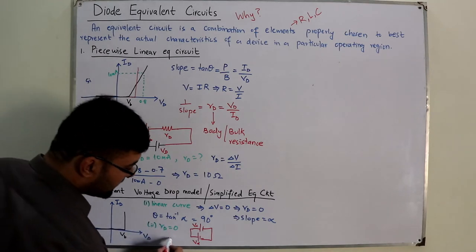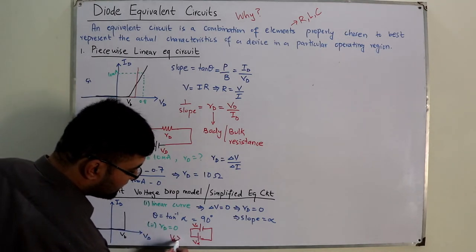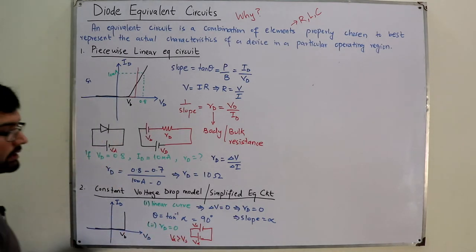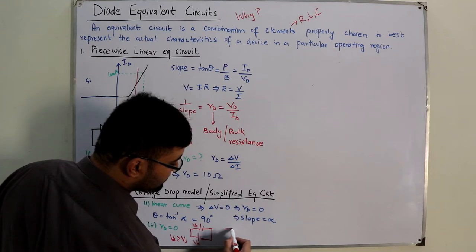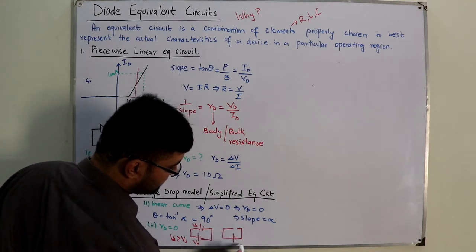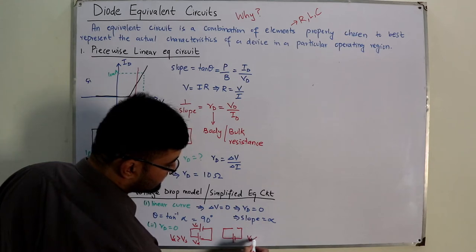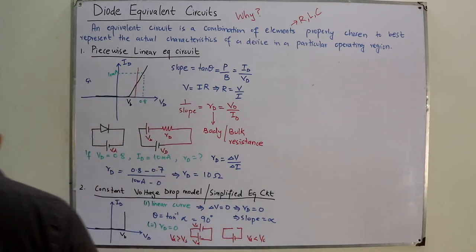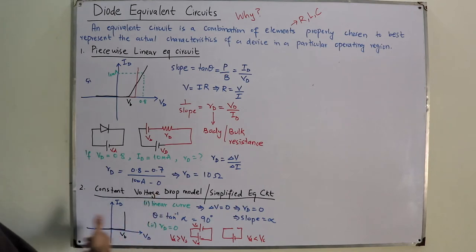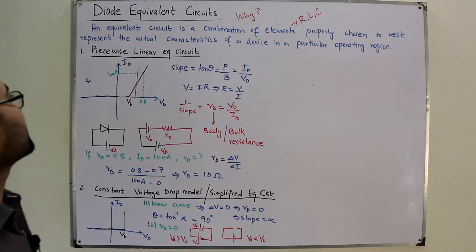This replacement is done when the voltage across the diode is greater than the barrier potential — in the forward bias region. When the voltage across the diode is less than Vb, you have an open circuit. This is how you replace the diode in the constant voltage drop model.